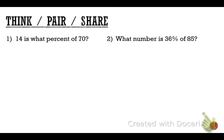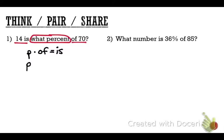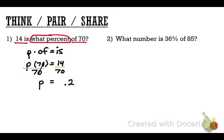Review problem: 14 is what percent of 70? Underline '14 is,' circle 'what percent,' underline 'of 70.' Formula: p times 70 equals 14. Divide both sides by 70. Result is 0.2; drop the leading zero, move the decimal two places to the right. Answer: 20%.